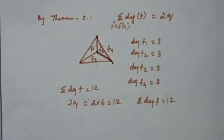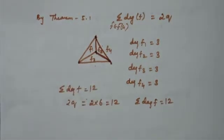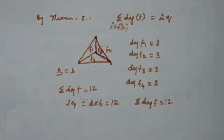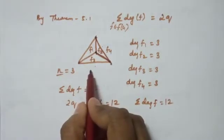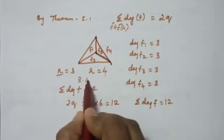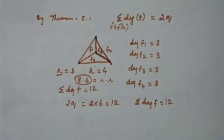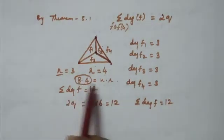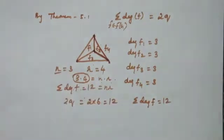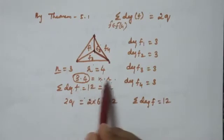Now we will relate the cycle length. Each face is bounded by a cycle, and the cycle length N is 3. The number of faces R is equal to 4. So N times R equals 4 times 3, which is 12. Thus the sum of the degrees of the faces equals N times R. Here N is the length of the cycle and R is the number of faces.